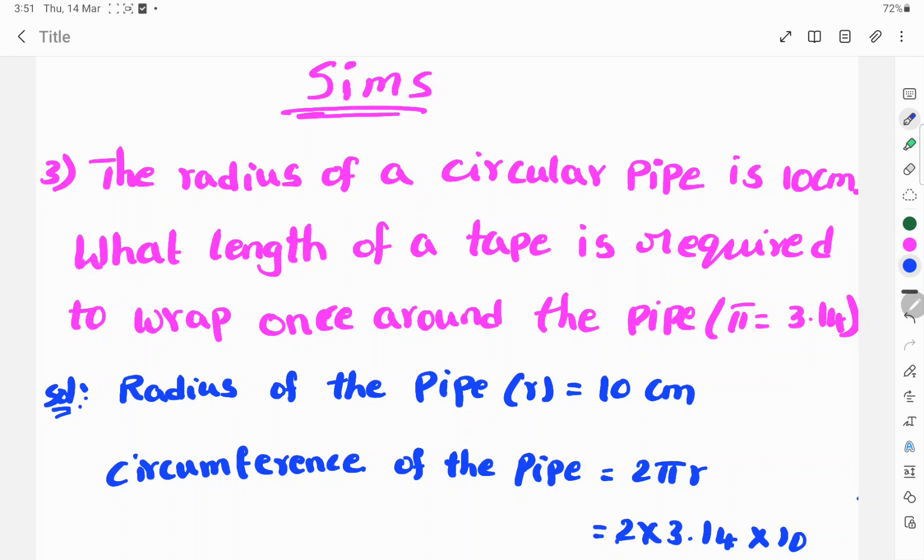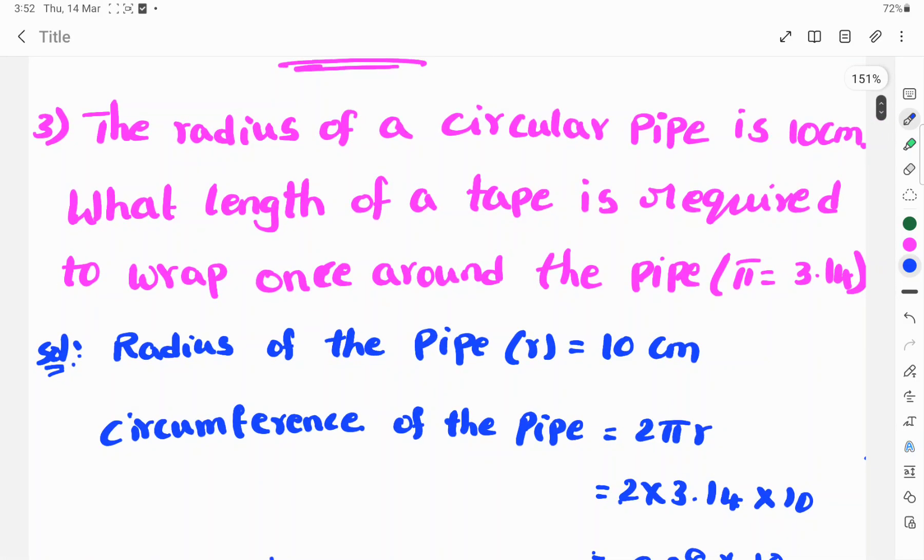The radius of a circular pipe is 10 centimeters. First, you see the solution. Given that radius of the pipe r equals 10 centimeters, and length of tape equals the circumference of the pipe. The circumference of the pipe formula is 2πr.